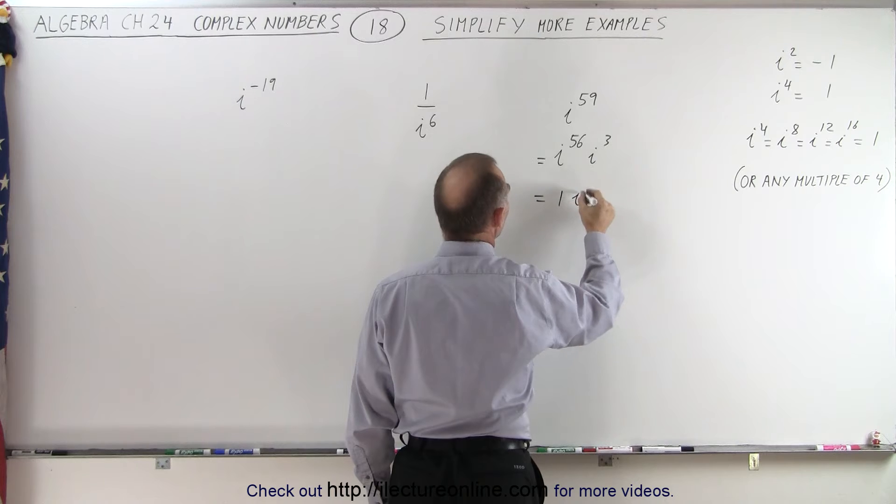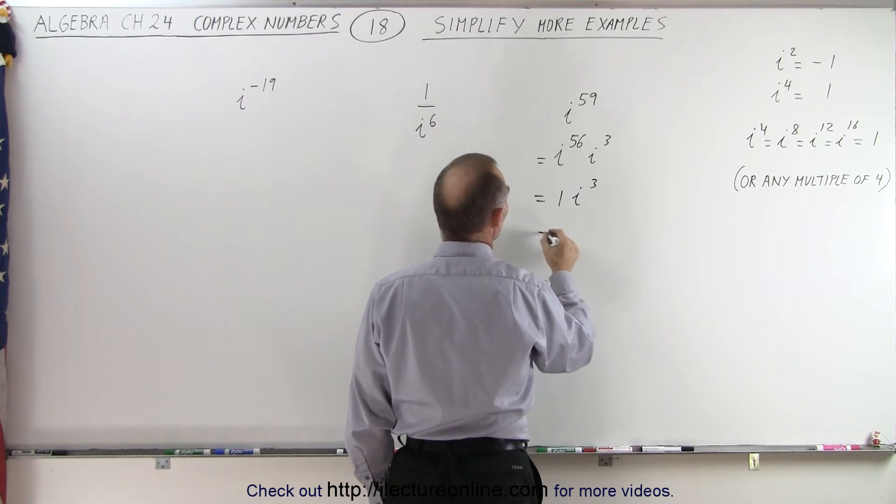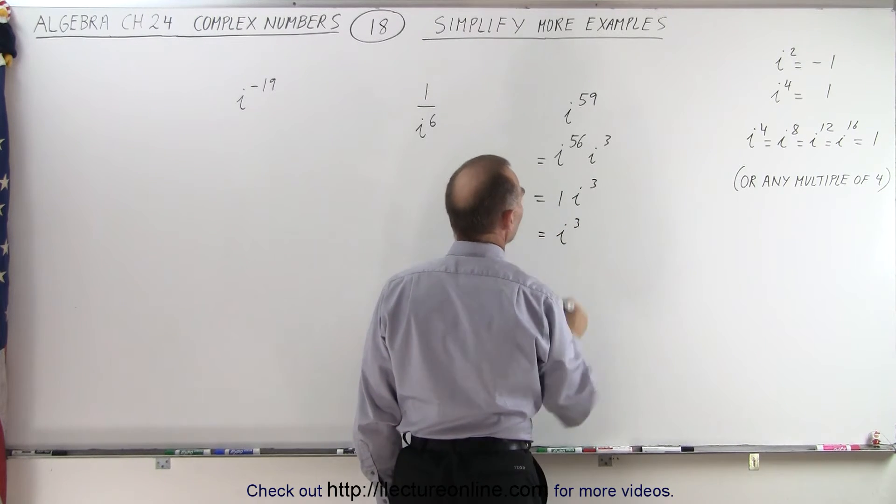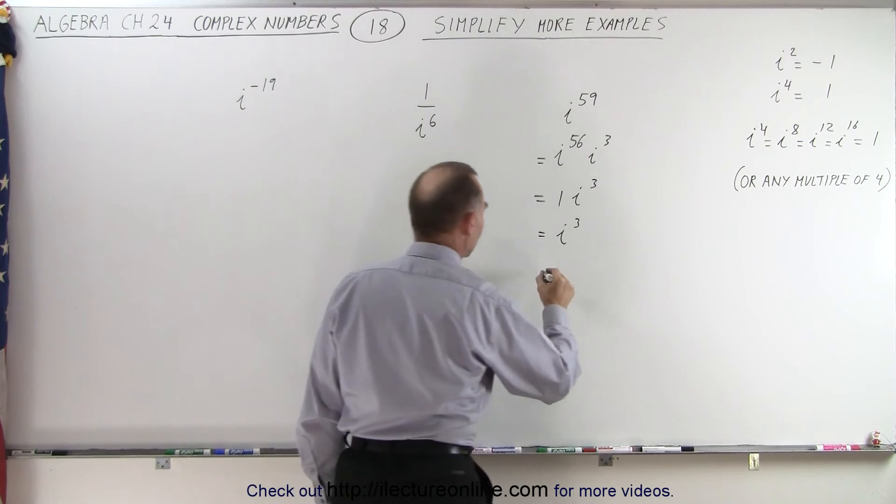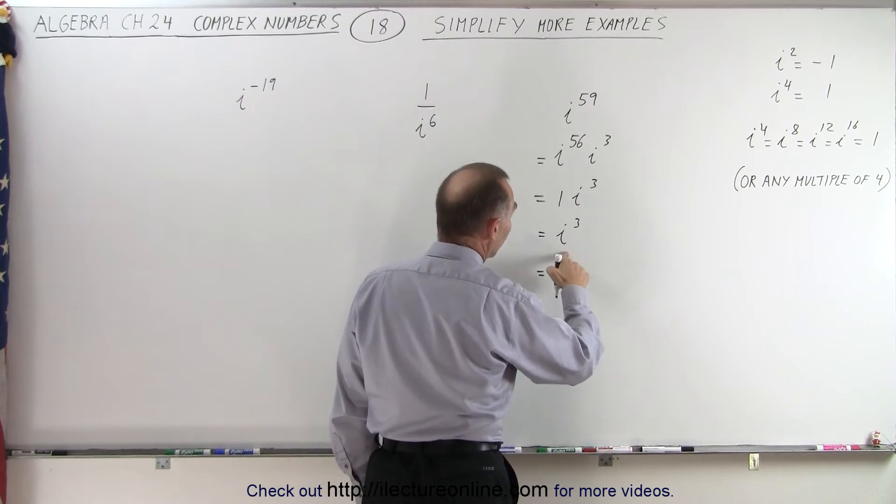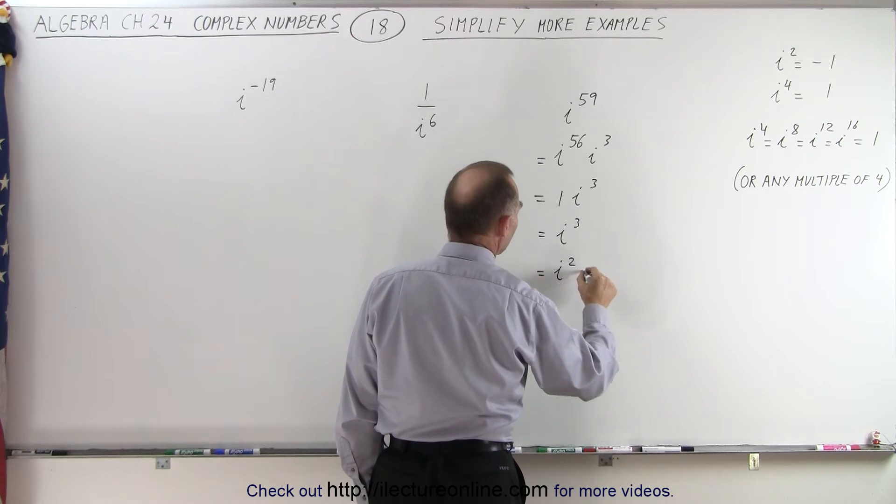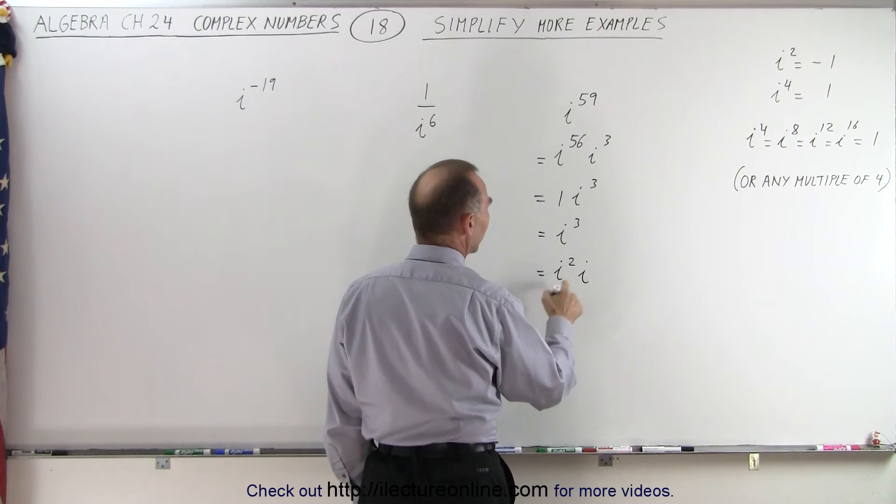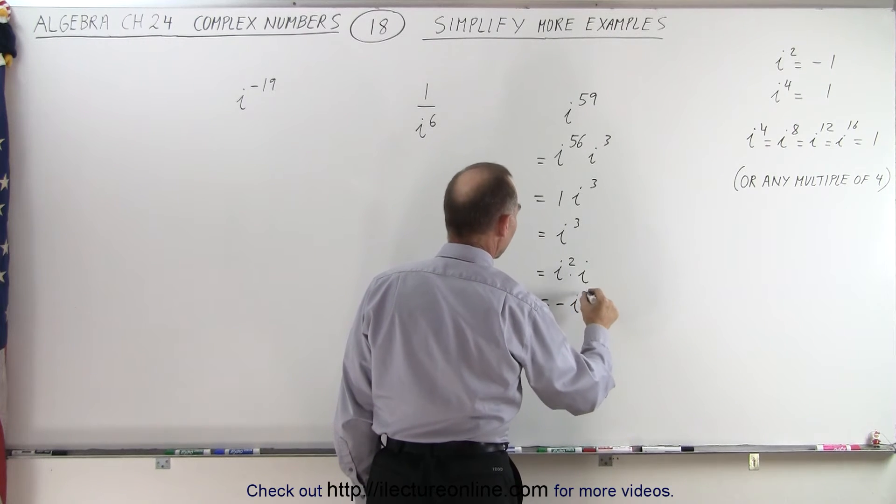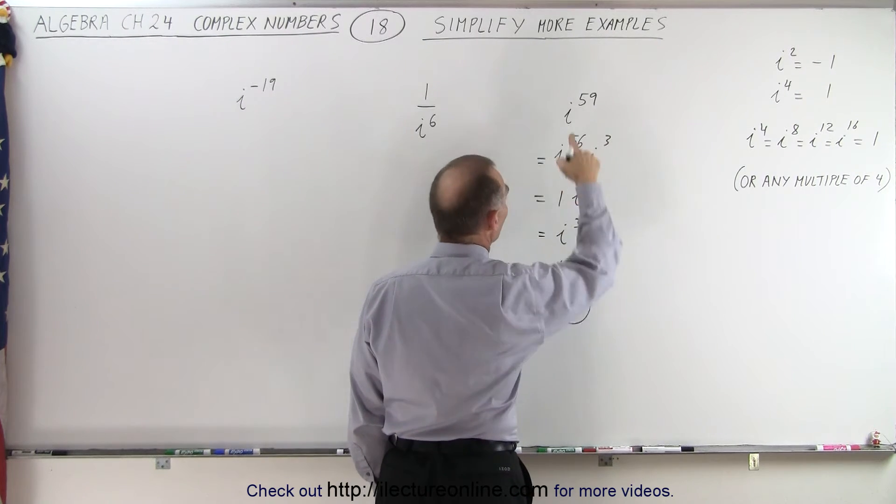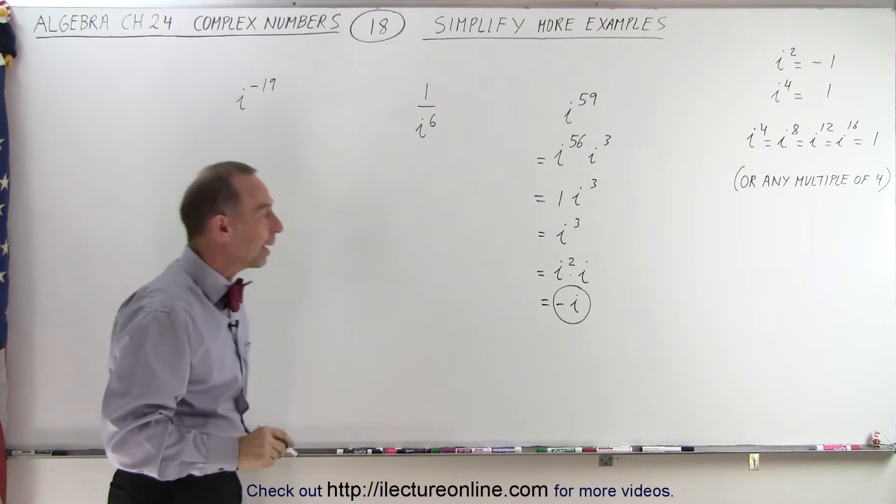We can write this as being equal to 1. So this is equal to 1 times i to the 3rd or simply i to the 3rd and of course i to the 3rd that's equal to negative i. So this is equal to, well if you're not sure, write it as i squared times i and i squared of course is equal to negative 1. So this is equal to negative i. So that's the simplified form of i to the 59th power.